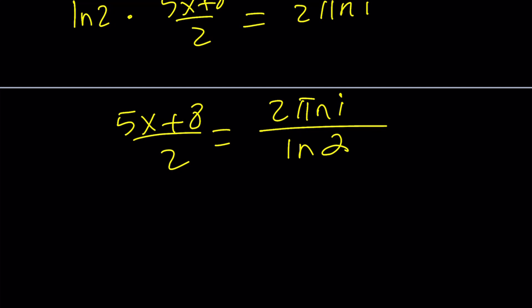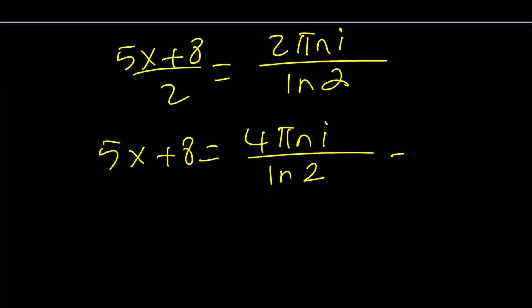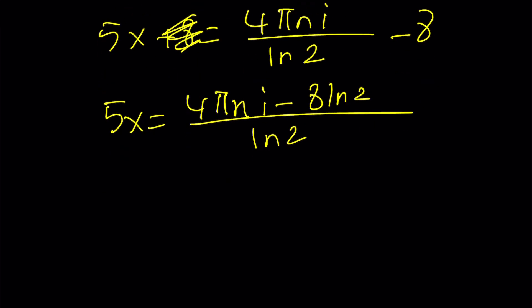And now we're going to solve for x. So let's go ahead and multiply both sides by 2 first. And that's going to give me 4 pi n i divided by ln 2. And then subtract 8. And then finally divide by 5. Let me make a common denominator first. And then I'm going to divide by 5. So it's going to give me 8 ln 2 divided by ln 2. And finally, if you divide by 5.